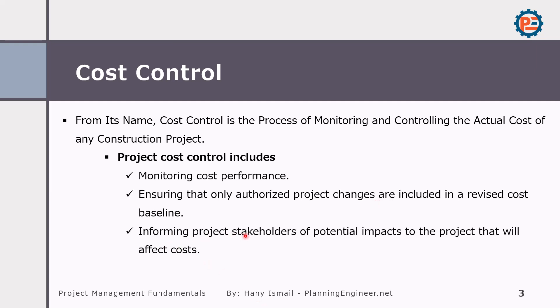Cost control also involves informing project stakeholders of potential impacts to the project that will affect costs. The concept of cost control is to have a proactive action in terms of cost. As we agreed, project management is all about being proactive. When you know how your project is performing, you can advise stakeholders — like your company owner or the client — that something is not going correct.